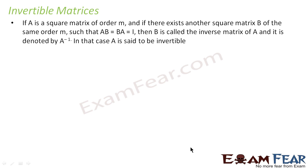A square matrix is said to be invertible if there exists another square matrix B of the same order such that AB = BA = I. Then B is called the inverse of A and is denoted by A inverse.